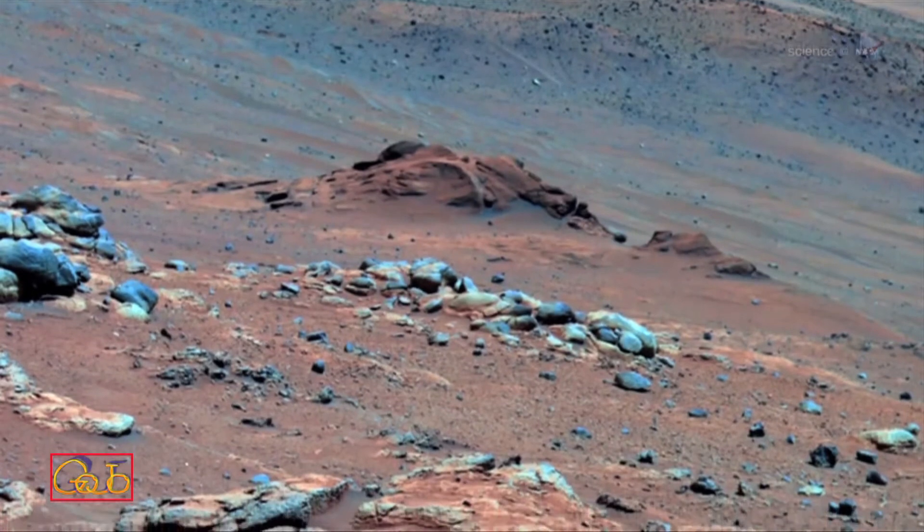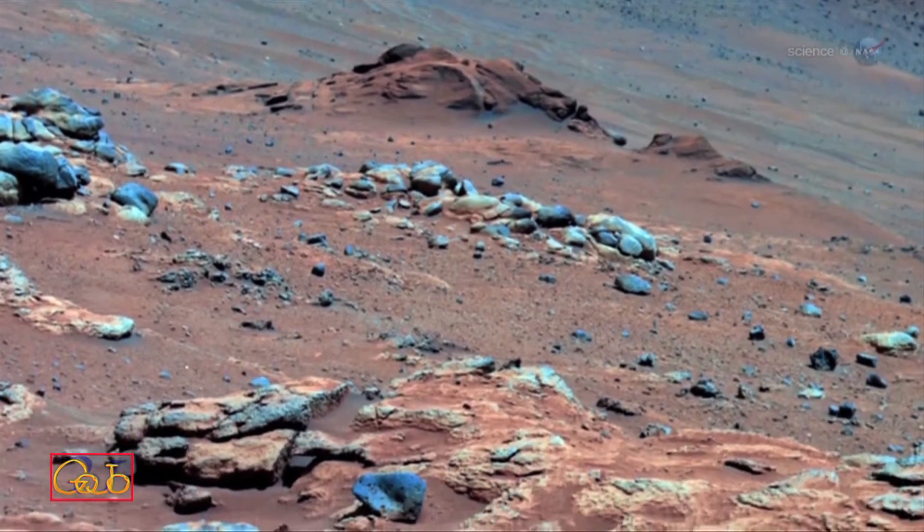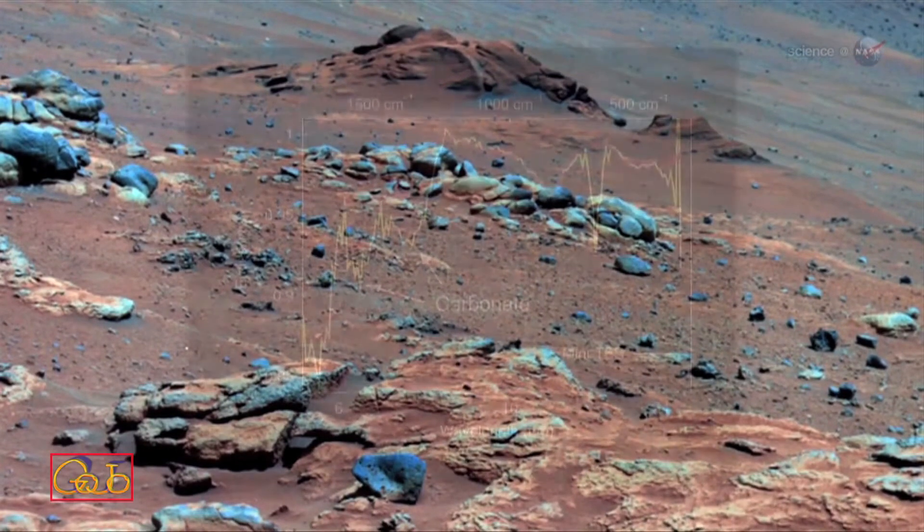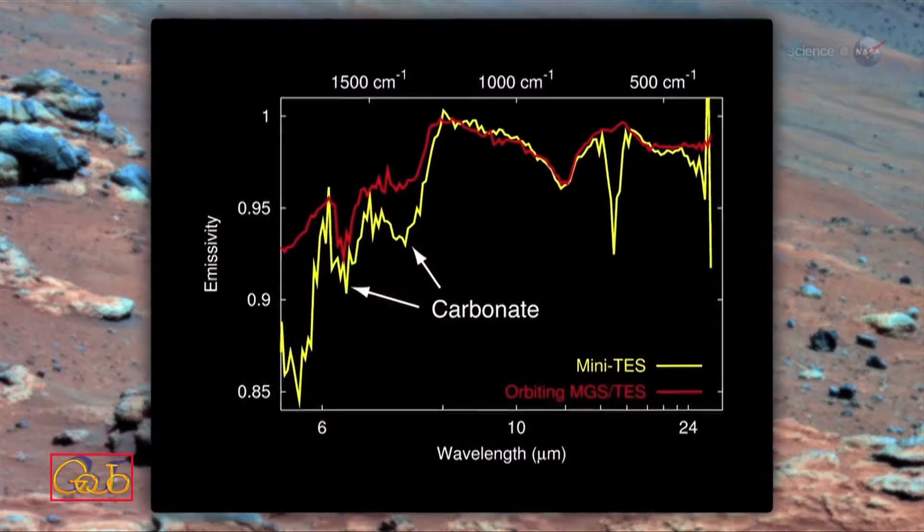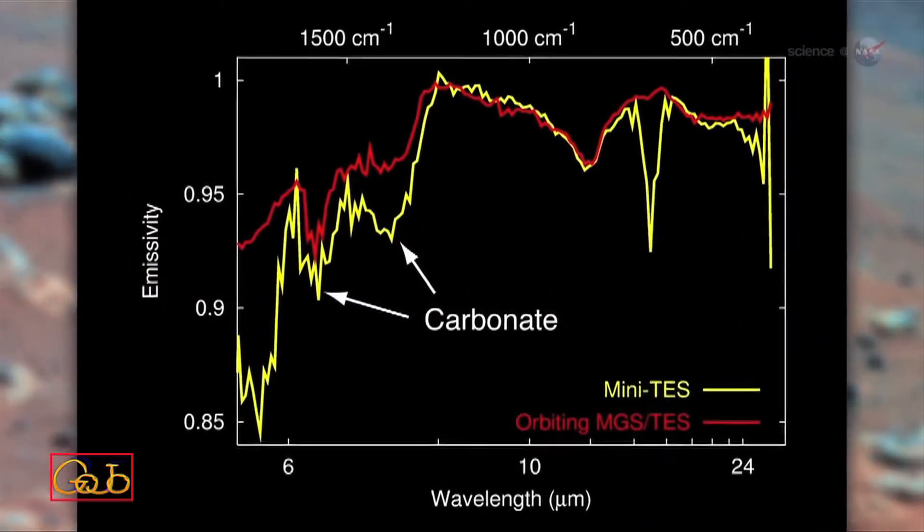Scientists have also speculated that the planet's surface might have absorbed the CO2 and locked it up in minerals such as carbonate. However, while carbonates have been found on the surface, they aren't present in enough abundance to account for an early, thick atmosphere.